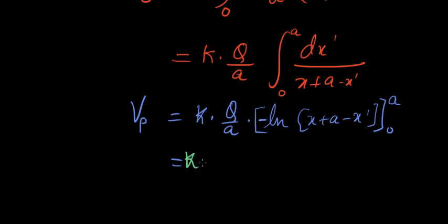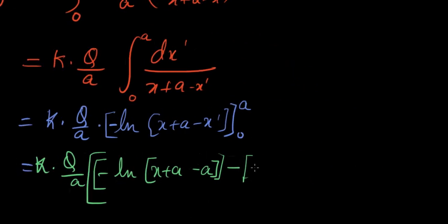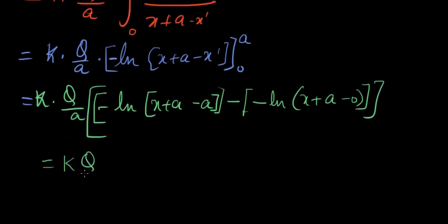K times Q over a, and higher limit minus lower limit. Let's put a here. Natural log of x plus a minus a, higher limit, minus, substitute zero for x prime, so x plus a minus zero.